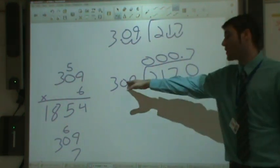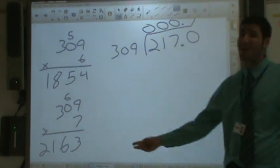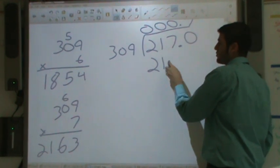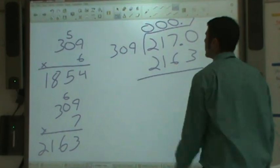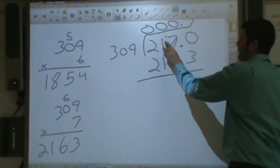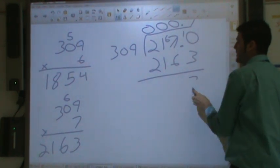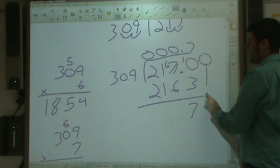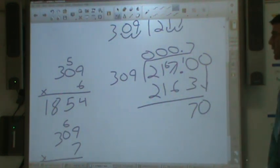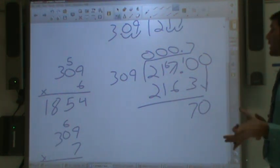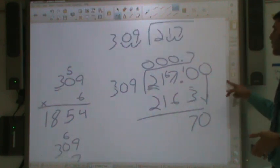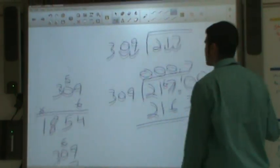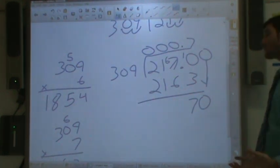Seven times 309, we just did that math over there. No need to do it again. It is 2,163. We subtract this out and we get 7, zero, bring it down. If you're wondering how many decimal places you should go, if you look at these numbers right here, they have three in them. So we should probably go three decimal places.